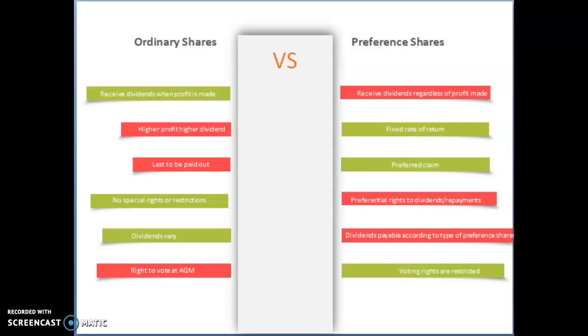Whereas cumulative preference shares will accumulate year on year. Lastly, ordinary shareholders have a right to vote at the annual general meeting. Whereas with preference shares, voting rights are restricted, so they do not have any voting rights.